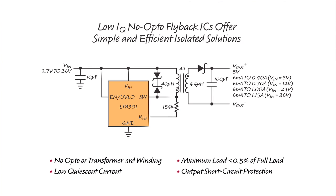Our Low IQ No Opto Flyback ICs eliminate opto-isolators or transformer third windings by sampling the isolated output voltage directly from the primary side switch node waveform, thereby simplifying the isolated power supply solutions. Internal compensation and internal soft start further simplify application solutions and reduce the external component count.